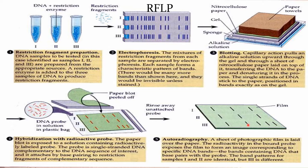Autoradiography is then done. A sheet of photographic film is laid over the paper. Radioactivity in the bound probe exposes the film to form an image corresponding to the specific DNA bands containing DNA that base pairs with the probe. The band patterns of samples one and two are identical, but the third sample is different — in this way we can identify the mutated sample.